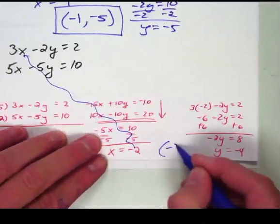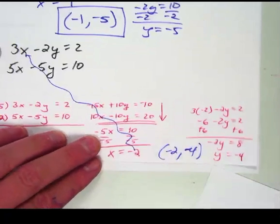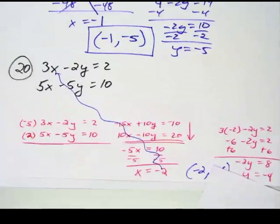So the final answer solution would be negative 2 comma negative 4 and that would be an ordered pair point where those two lines intersect. So you should hopefully have some idea now how to work through those better, good luck.